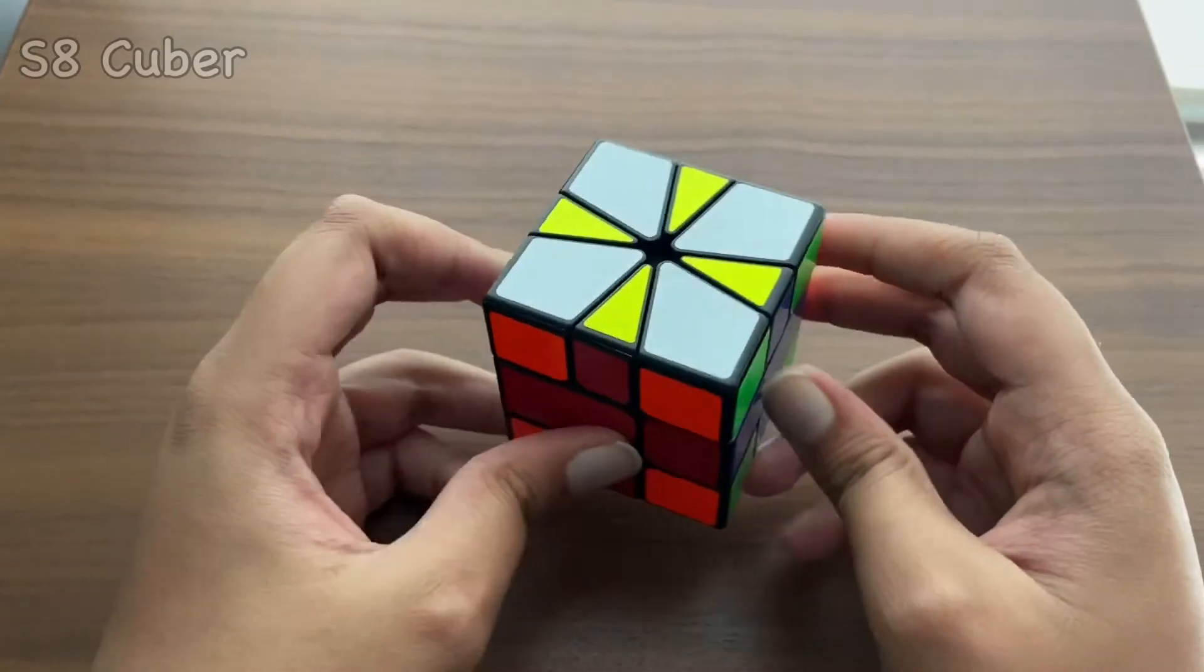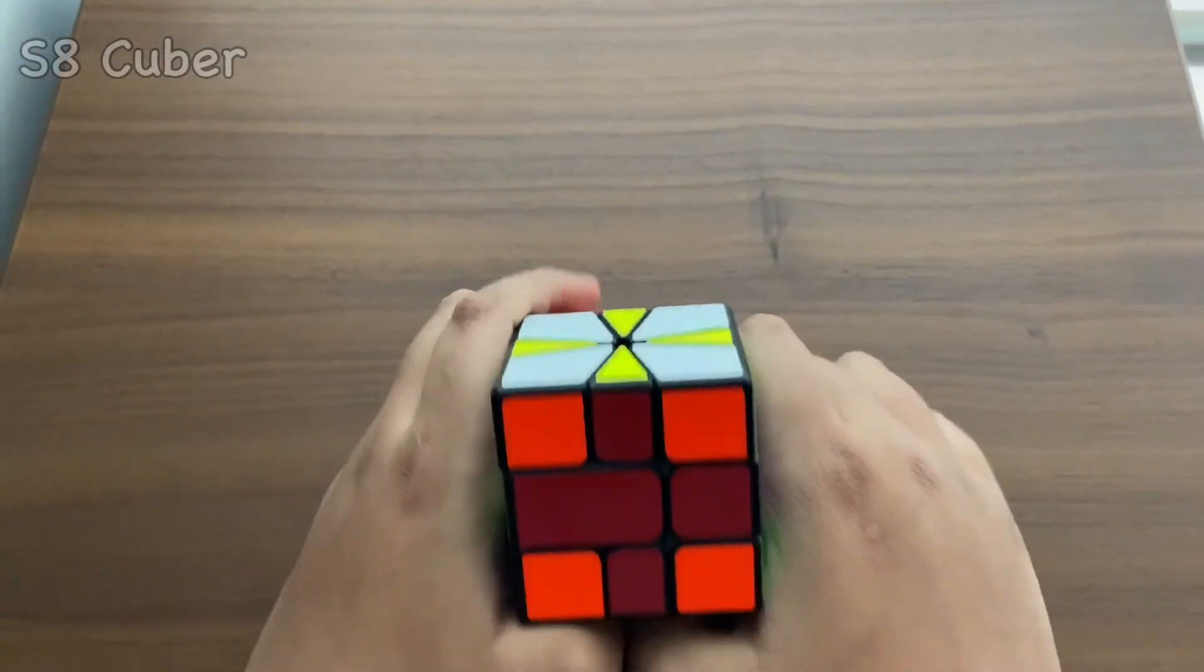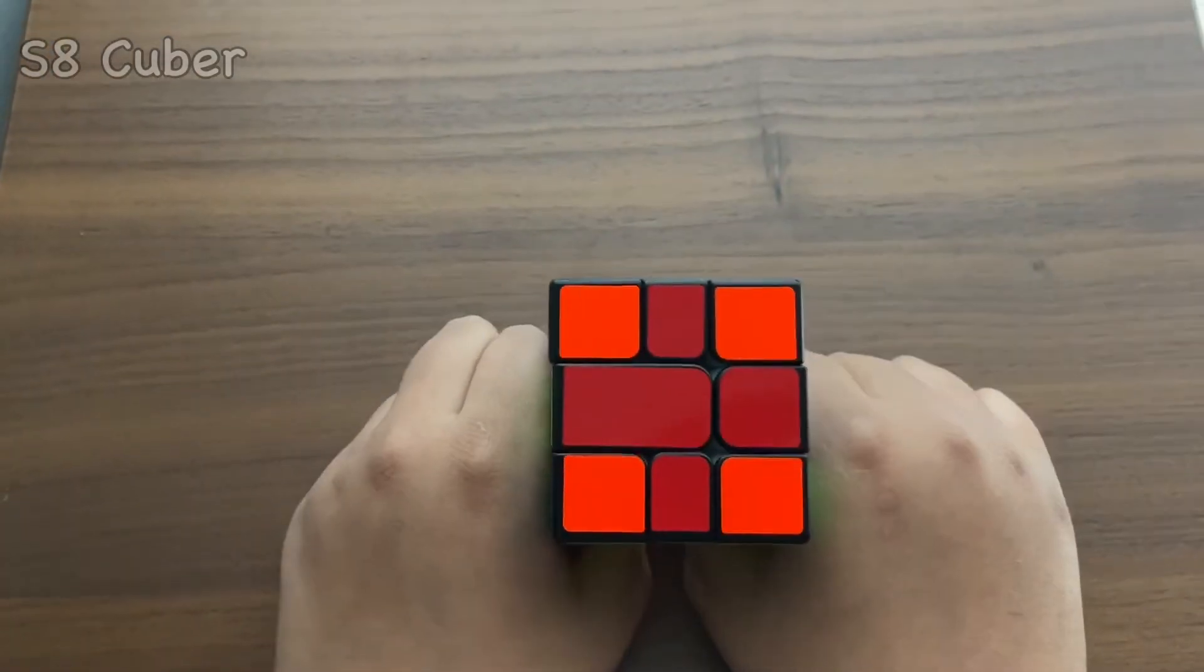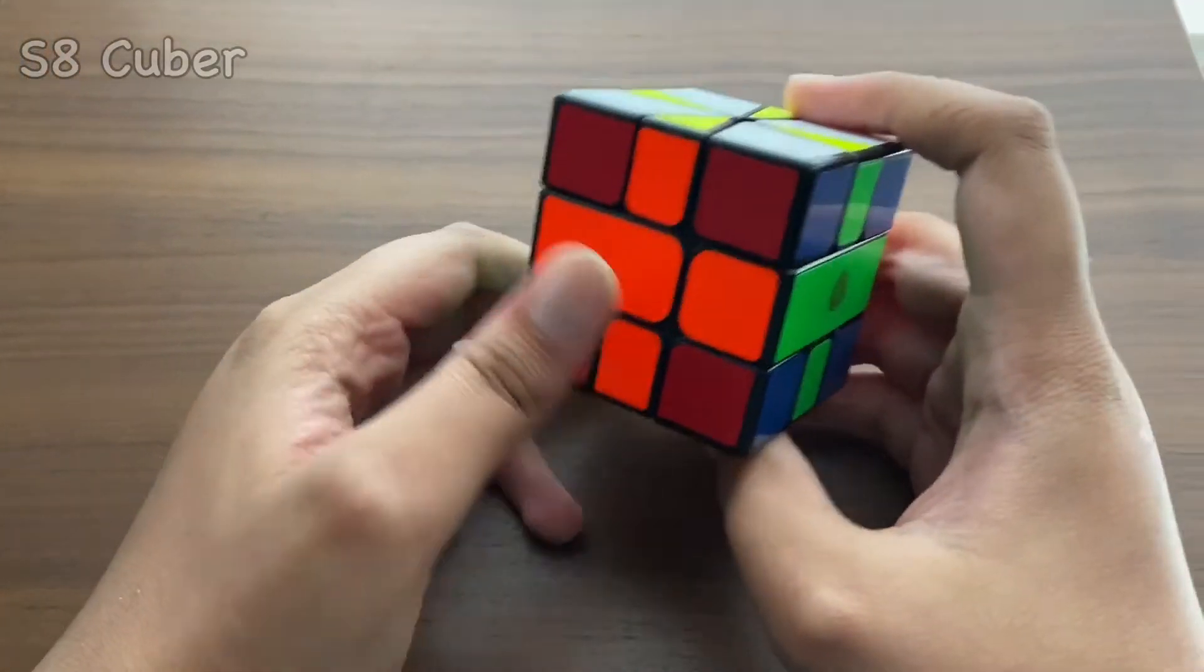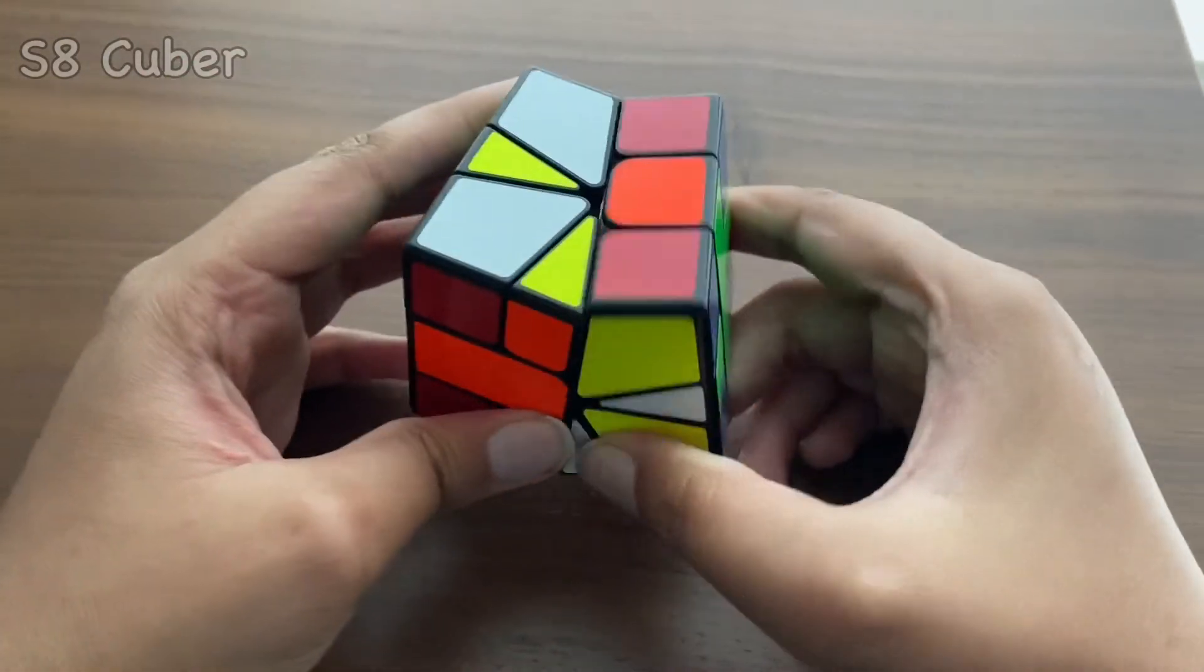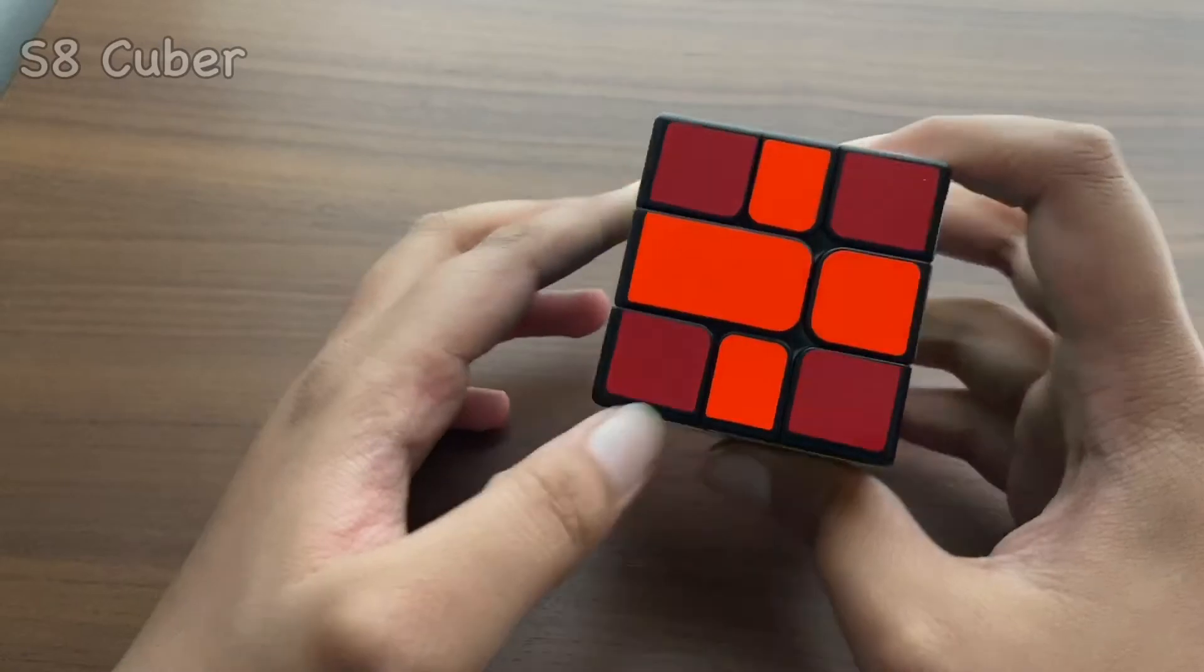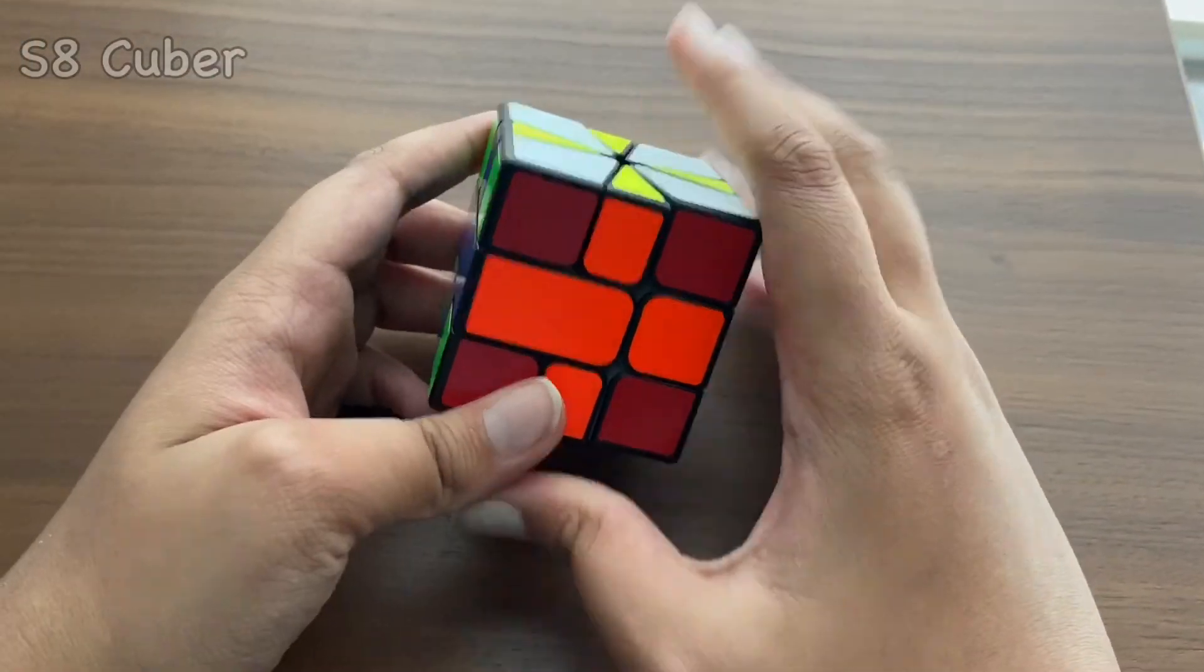So basically, this is the checkerboard pattern in the Square-1. For this pattern, I hope you like this pattern. This is the regular pattern, but in this cube, the algorithm is just way different because the movements are way different. And also it looks way different, but it is a checkerboard pattern. So for now, bye bye.